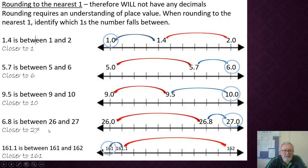Six and eight tenths, you know what, there must be a two missing over here. Twenty-six and eight tenths, that should read, is between twenty-six and twenty-seven. So twenty-six and eight tenths rounds up to twenty-seven. One hundred and sixty-one and one tenth is between one hundred and sixty-one and one hundred and sixty-two. It's closer to one hundred and sixty-one, so it's rounded down.